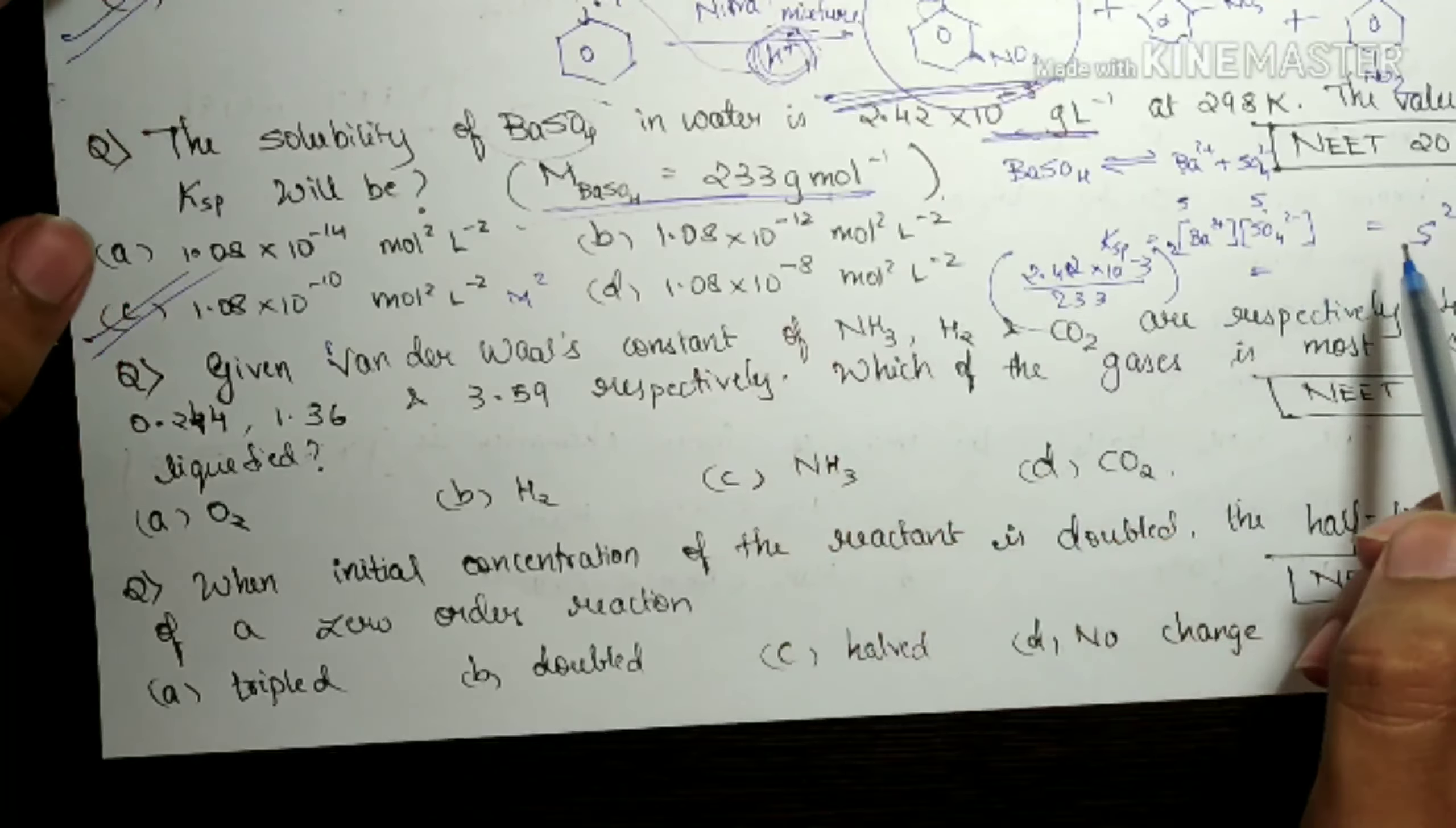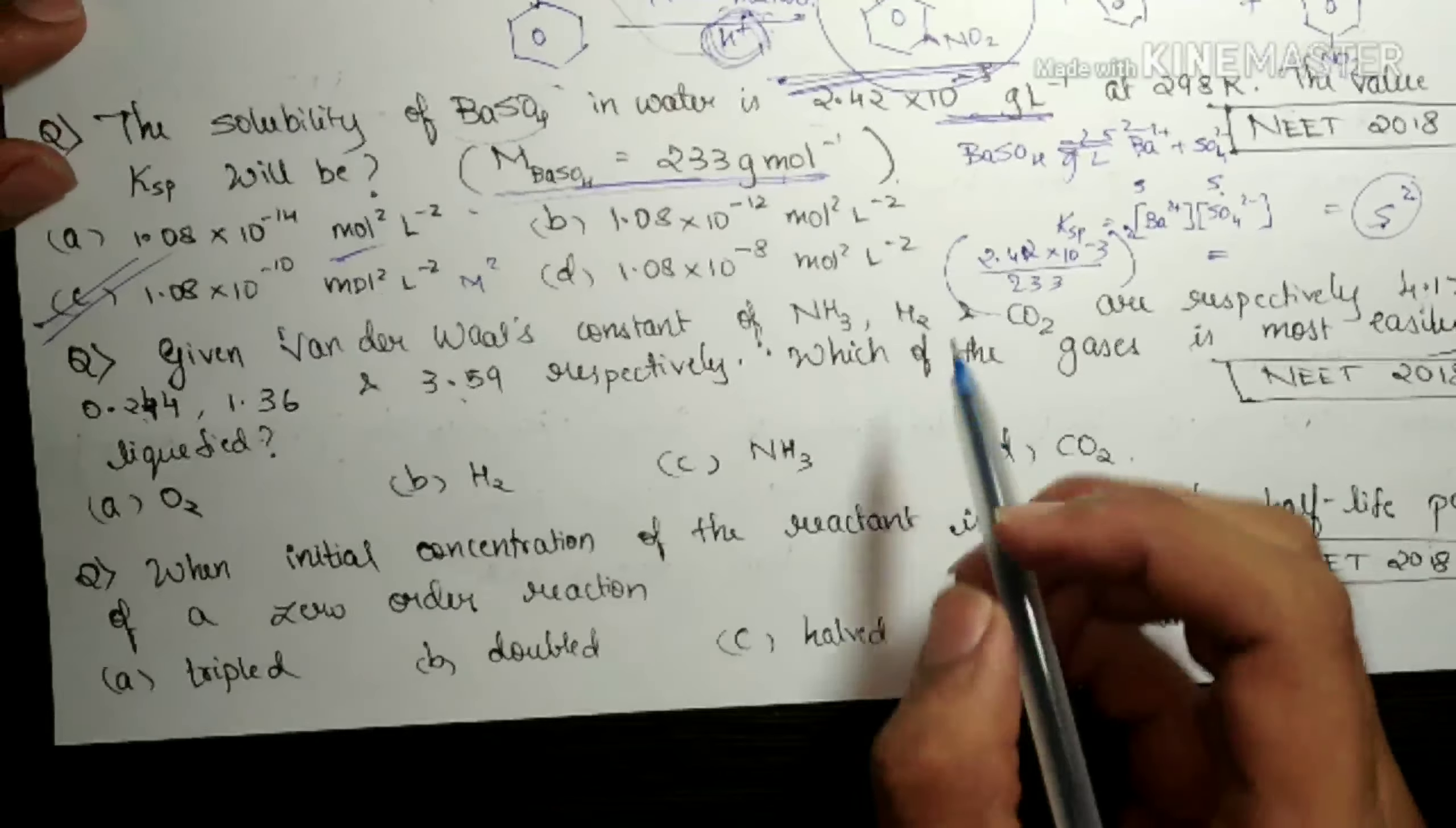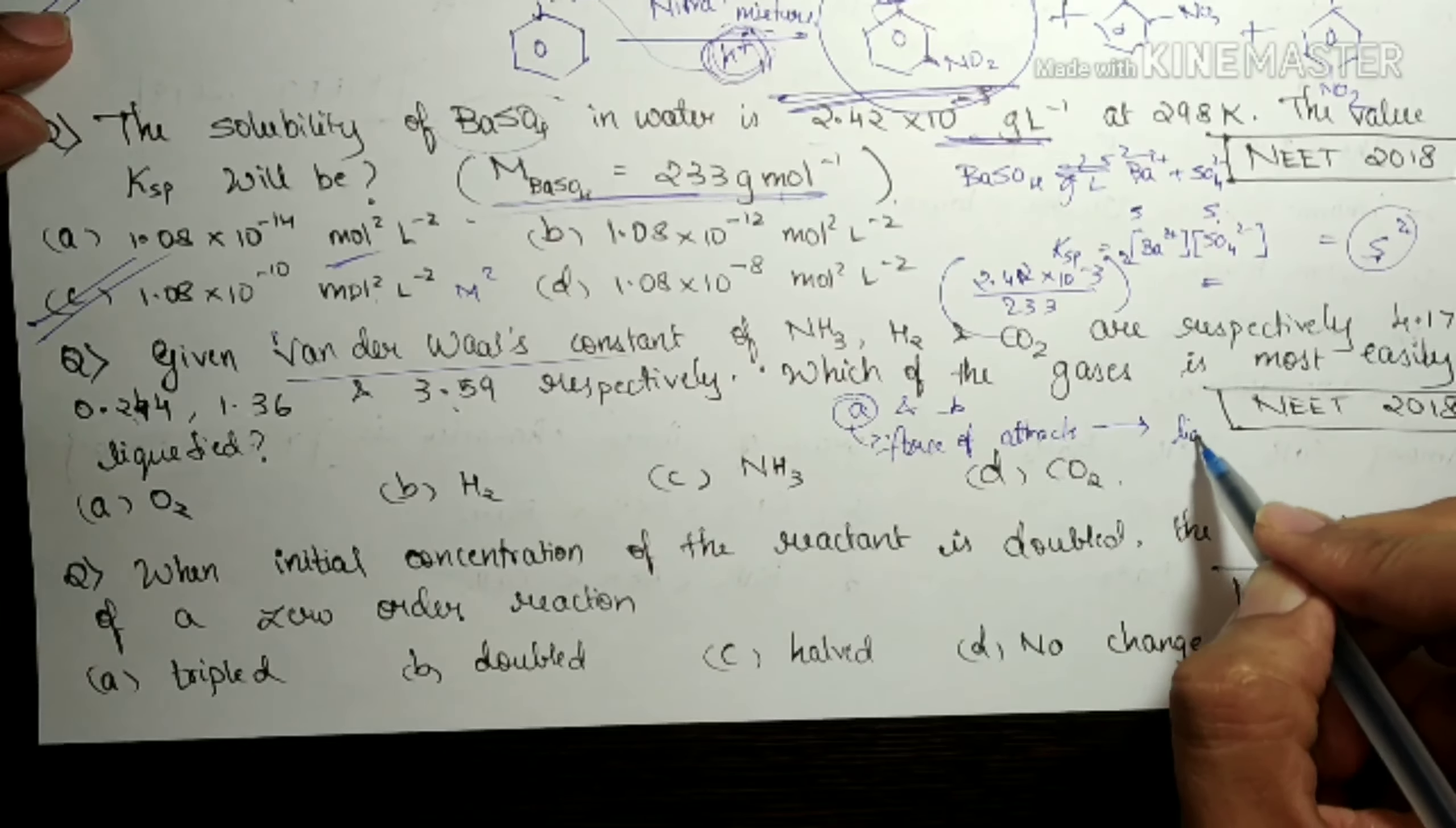Let's see the next question which says, given Van der Waals constant for NH3, H2, CO2 respectively 4.17, 0.244, 1.36 and 3.59 respectively. Which of the following gases is most easily liquefied? Van der Waals constant, there are two Van der Waals constants A and B. In that, A is a measure of force of attraction, which is related to liquefaction obviously. If force of attraction is more, then liquefaction is easier. So which has more value of A, that can be easily liquefied. In that case, 4.17 is the highest of all these four. 4.17 belongs to ammonia. That means option C, NH3 should be the correct answer.